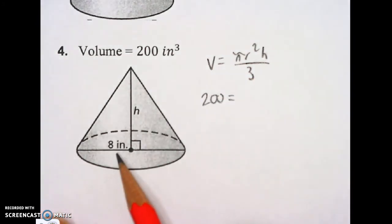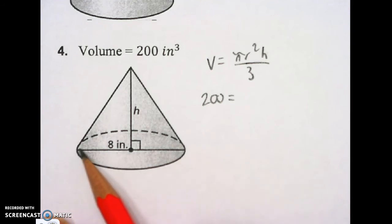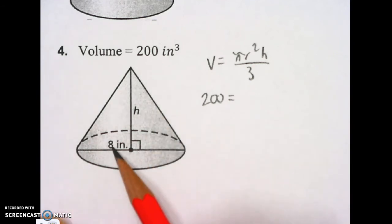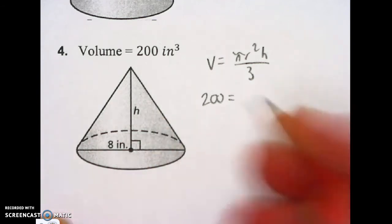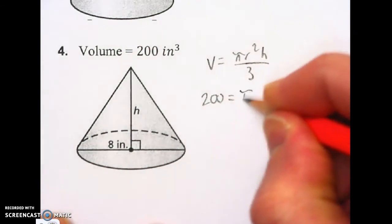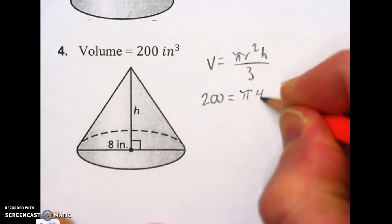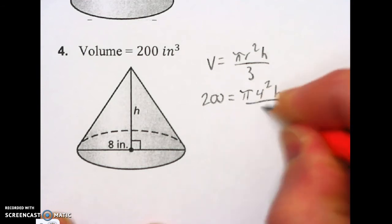I'm going to put in my radius. It gives me the diameter. When you have a line that goes all the way across a circle, it's the diameter. So I'm going to have to cut that in half to get the radius. So it'll be four for a radius. So pi times four squared times the height divided by three.